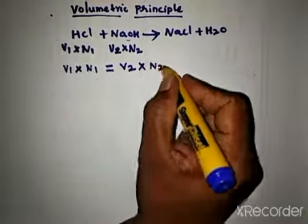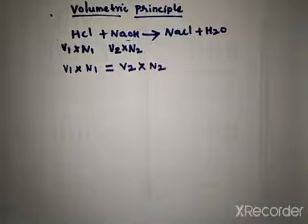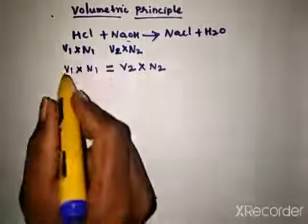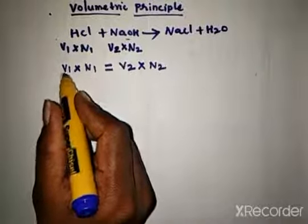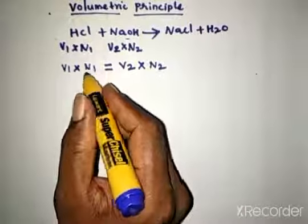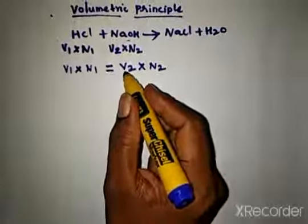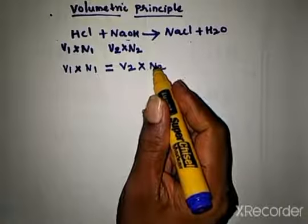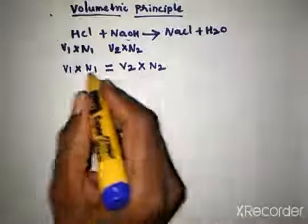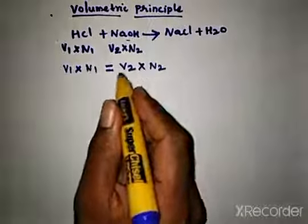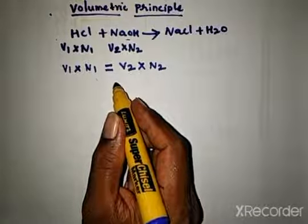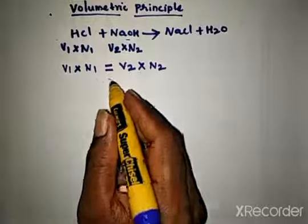This equals the product of volume and normality of the other solution — this is called the volumetric principle. It can be applied to other titrations too. Here V1 is the volume of HCl, N1 is the normality of HCl, V2 is the volume of NaOH, and N2 is the normality of NaOH. Using this equation we can calculate the unknown normality of a solution.